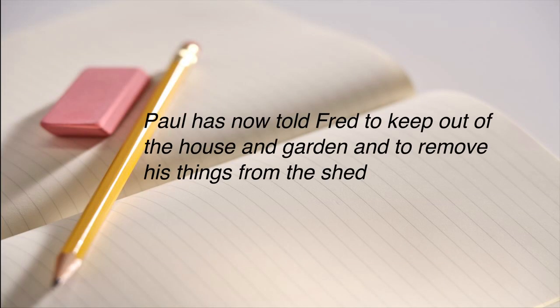The question says 'advise Fred,' so answer the question and advise Fred. Look at the end of the question: Paul has now told Fred to keep out of the house and garden and to remove his things from the shed. You have to advise Fred about this. There are two issues: keeping out of the house and garden, and removal of the stuff from the shed. You need to deal with them separately. It is a problem question, so the introduction should be short and you should address each of the issues individually — do not approach it like an essay question and write just generally.